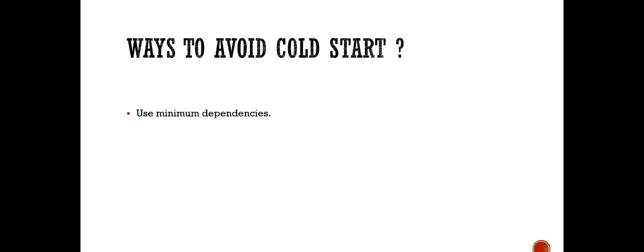As discussed in the previous video, we should keep the dependencies of our functions to a minimum. More dependencies means more packages to download at start, resulting in high boot times. A good way to ensure minimum dependencies is by making sure your functions are following single responsibility principles.